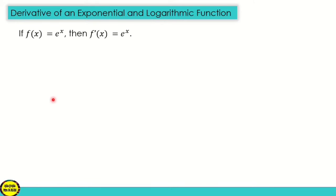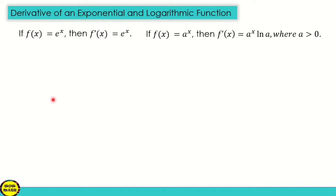If f of x is equal to e raised to x, then f prime of x is equal to e raised to x. If f of x is equal to a raised to x, then f prime of x — the derivative of a raised to x — is equal to a raised to x times ln a, where a is greater than 0.